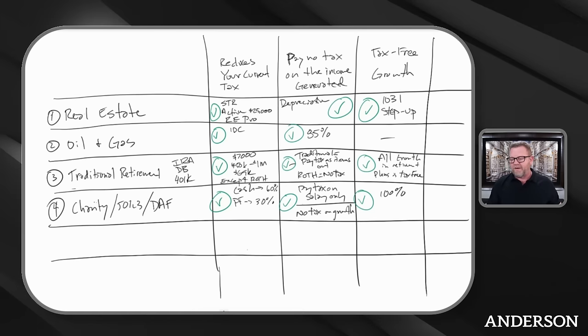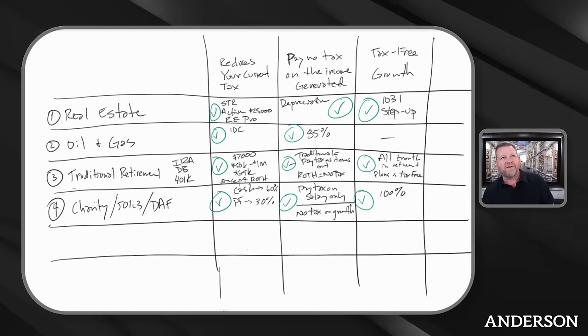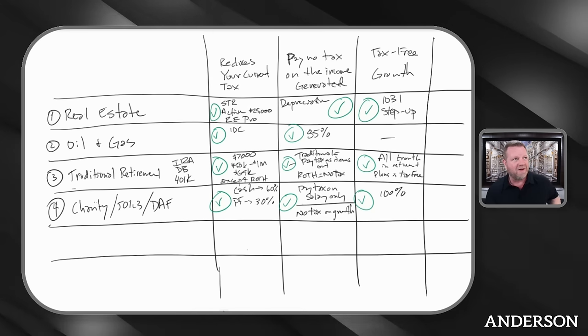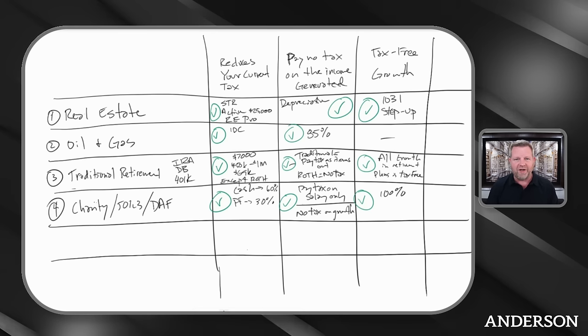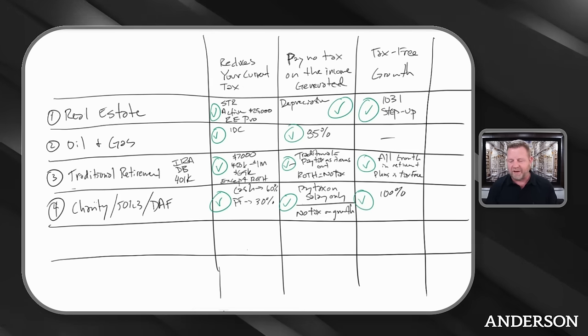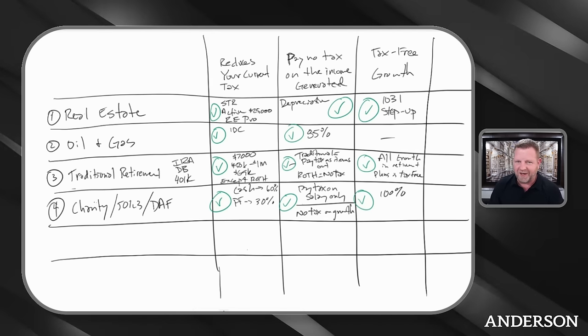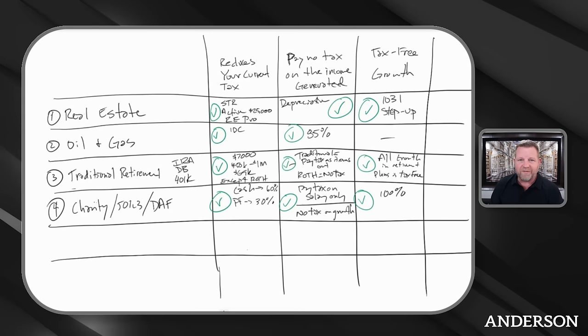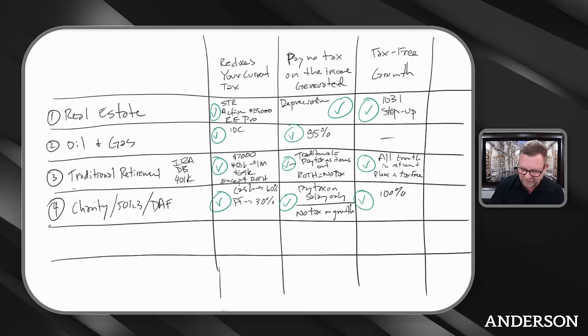Tax-free growth, 100%. If it gets too big, I think there's like a 1% tax if you have too much in your endowments, but for us mortals, there's no tax.